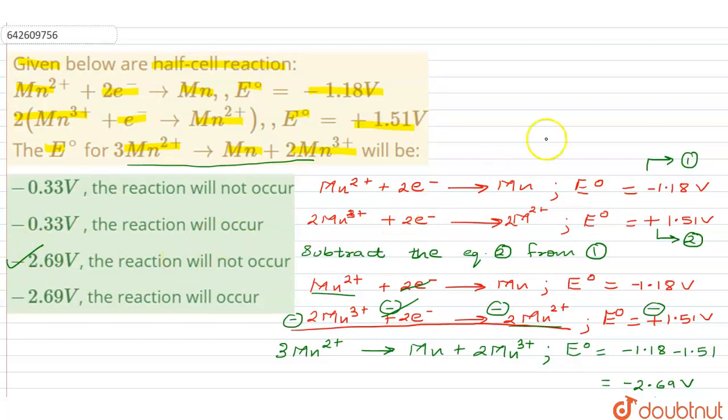We can take the help of delta G⁰ value also and at every stage we can find out the delta G⁰ value and sum it up. That can also be done but this is a simpler method which you can use. I hope you understood the explanation. Thank you.